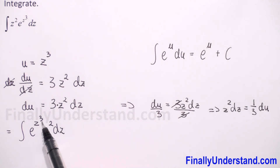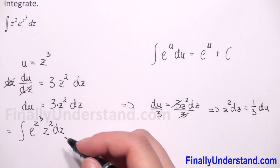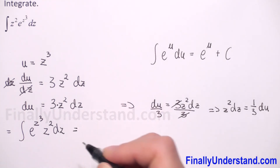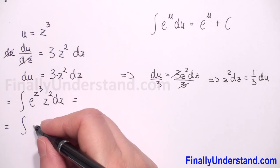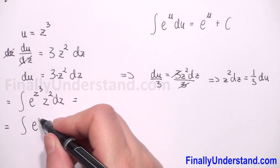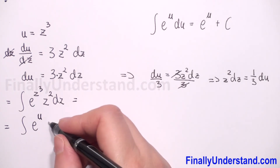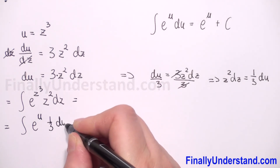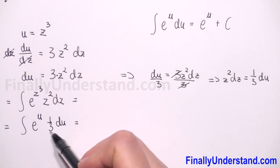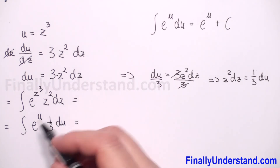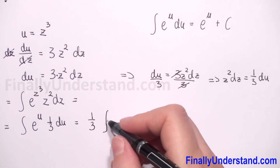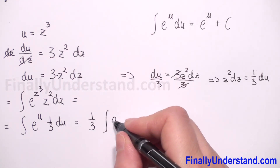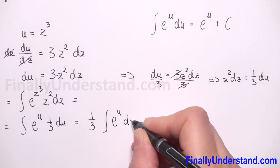We have z cubed equal to u, and z squared dz equal to one-third du. So we can rewrite our indefinite integral in the form of e to the power u times one-third du. Since we have a constant and multiplication, we can take the constant before the integral, giving us one-third times the indefinite integral of e to the power u with respect to u.